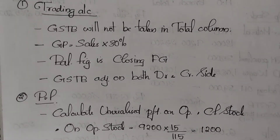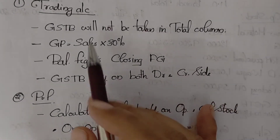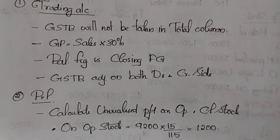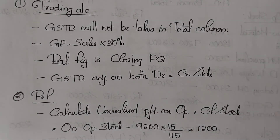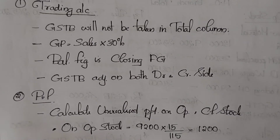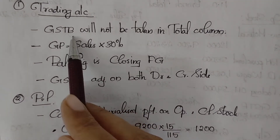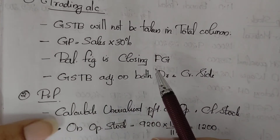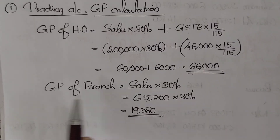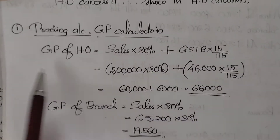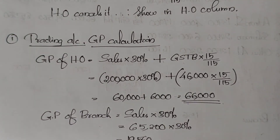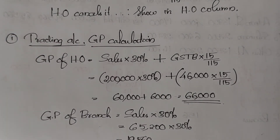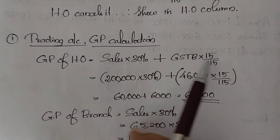Key points to note: Goods sent to branch is excluded from the total column because it is an inter-department and inter-unit transaction. Gross profit for head office = sales × 30% plus goods sent to branch × 15/115 (the profit element in the invoice price). Branch gross profit = branch sales × 30%.